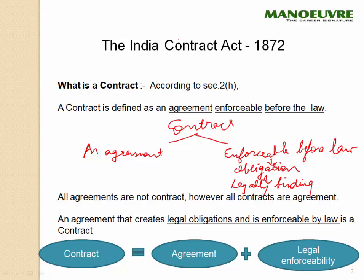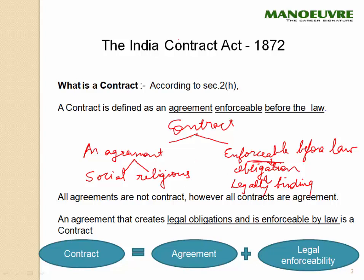An agreement which is of a social or religious nature will not be legally binding. For example, if A tells B 'let's go out for dinner' and B says 'okay, I will be there' — it is an agreement of a social nature. If B does not turn up, A cannot go to the court of law and say he wants to sue his friend for not coming to dinner. The court will say it is not a legally binding document.